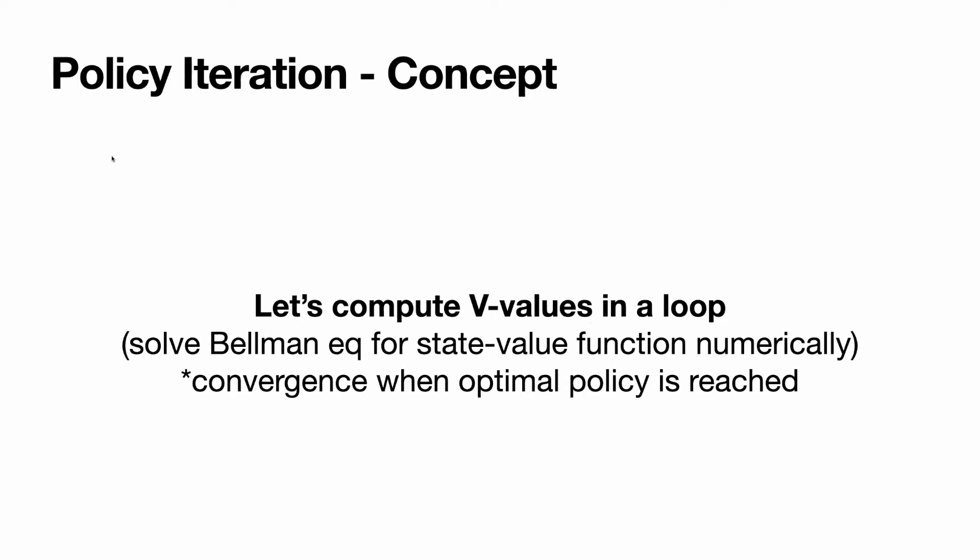The ratio algorithms that we are going to talk about now, value iteration and policy iteration, they are nothing else than a way to solve Bellman optimality equations for state value and action value functions, numerically. They converge when the optimal policy is reached.